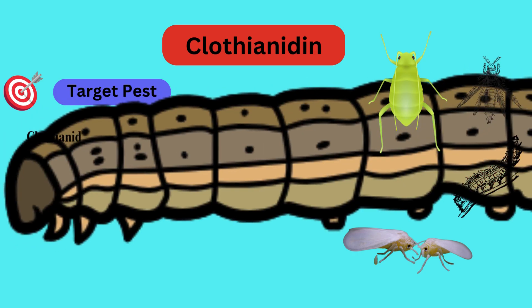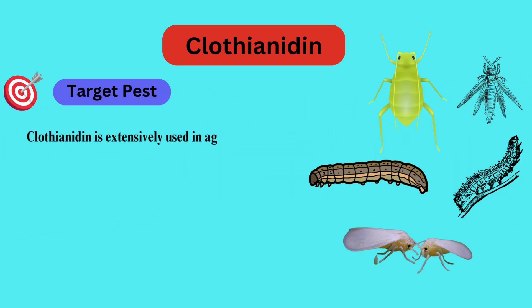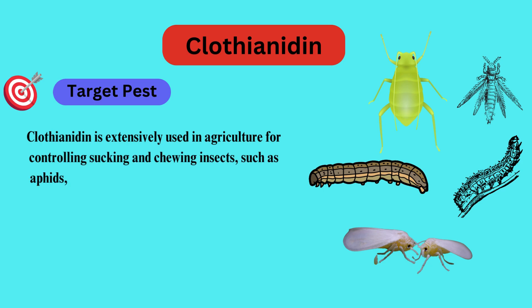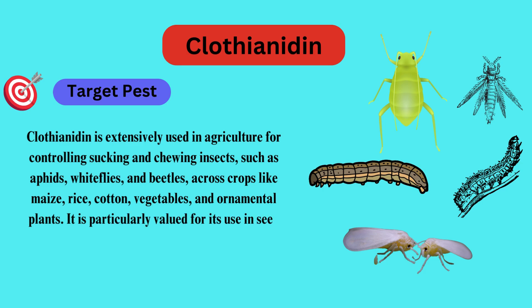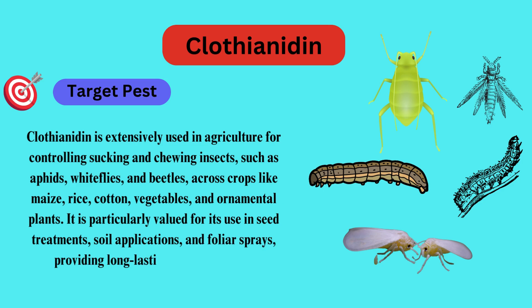Clothianidin is extensively used in agriculture for controlling sucking and chewing insects, such as aphids, whiteflies, and beetles, across crops like maize, rice, cotton, vegetables, and ornamental plants. It is particularly valued for its use in seed treatments, soil applications, and foliar sprays, providing long-lasting pest protection.